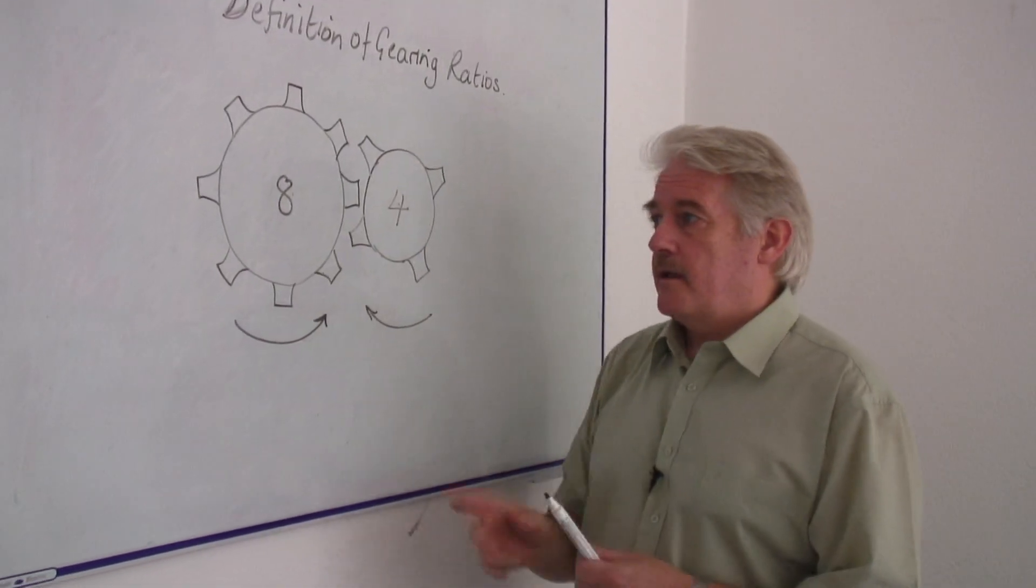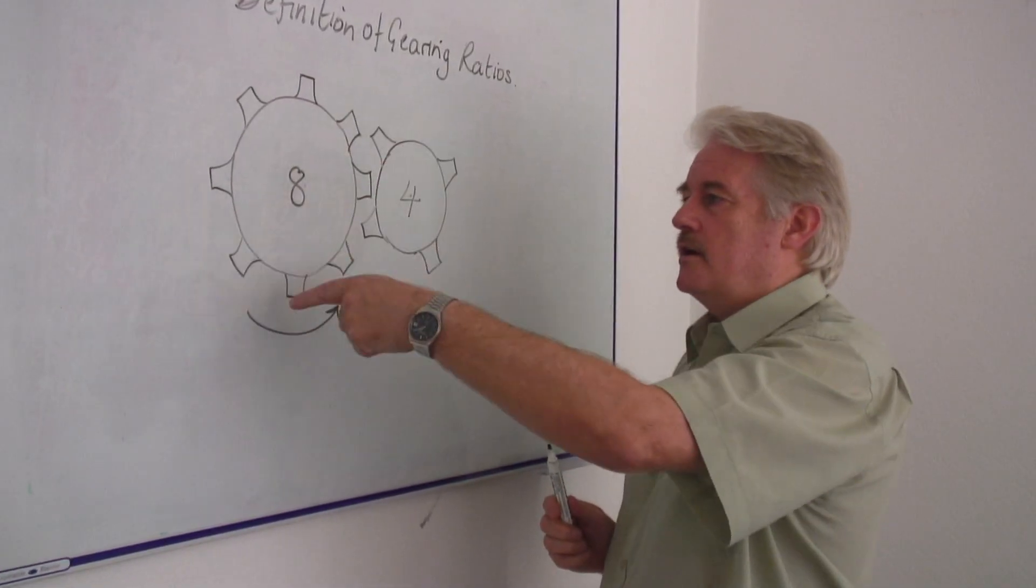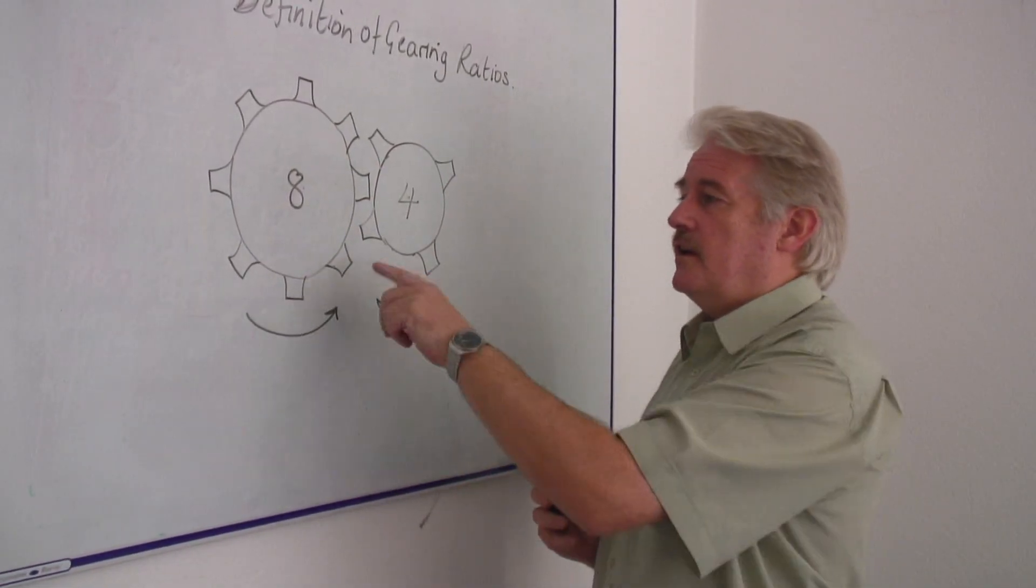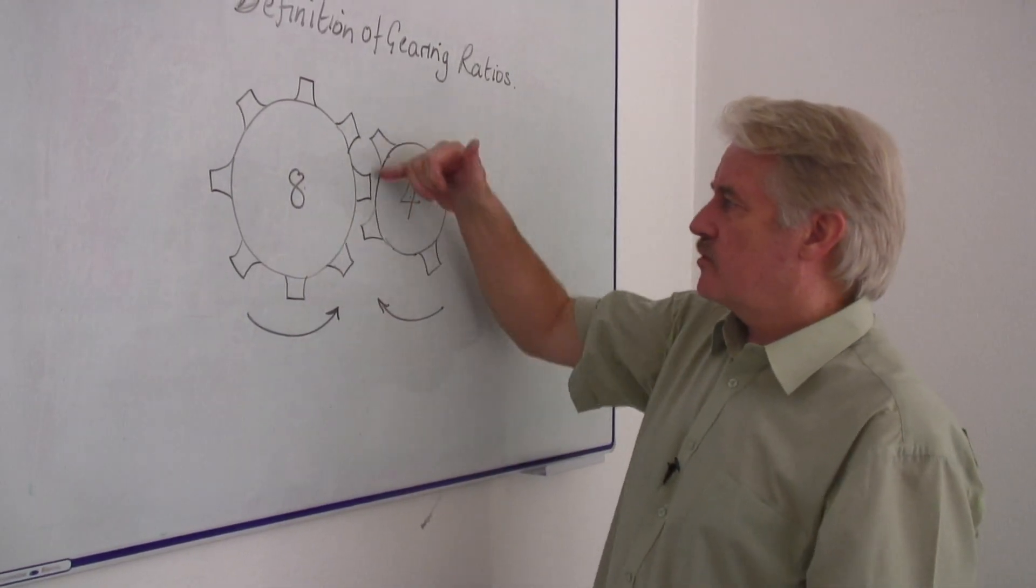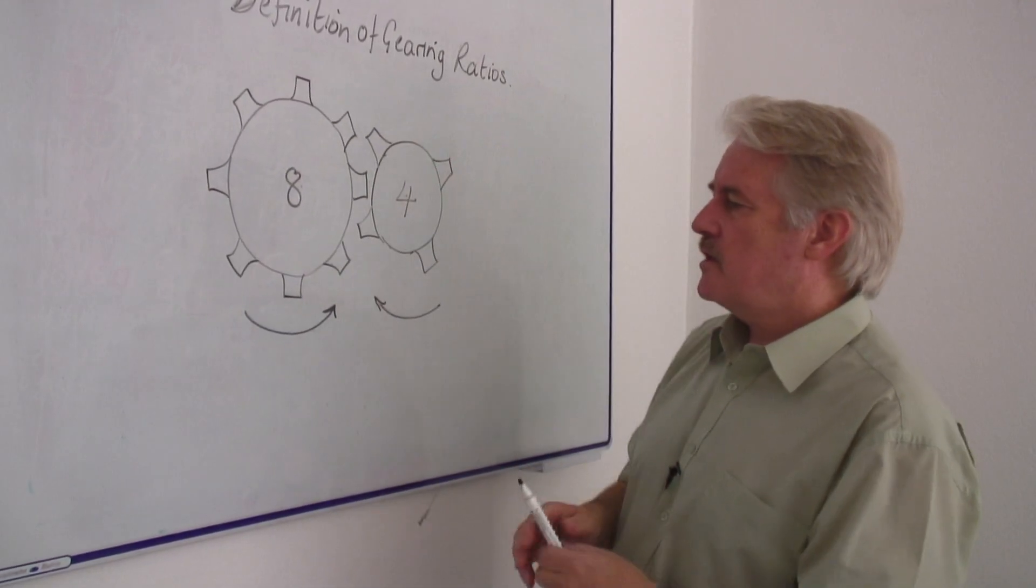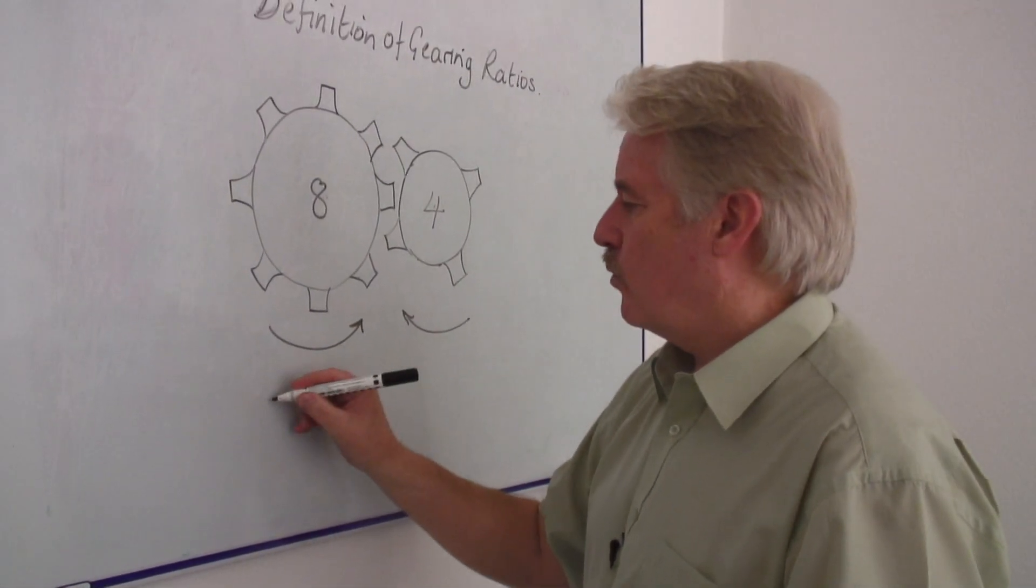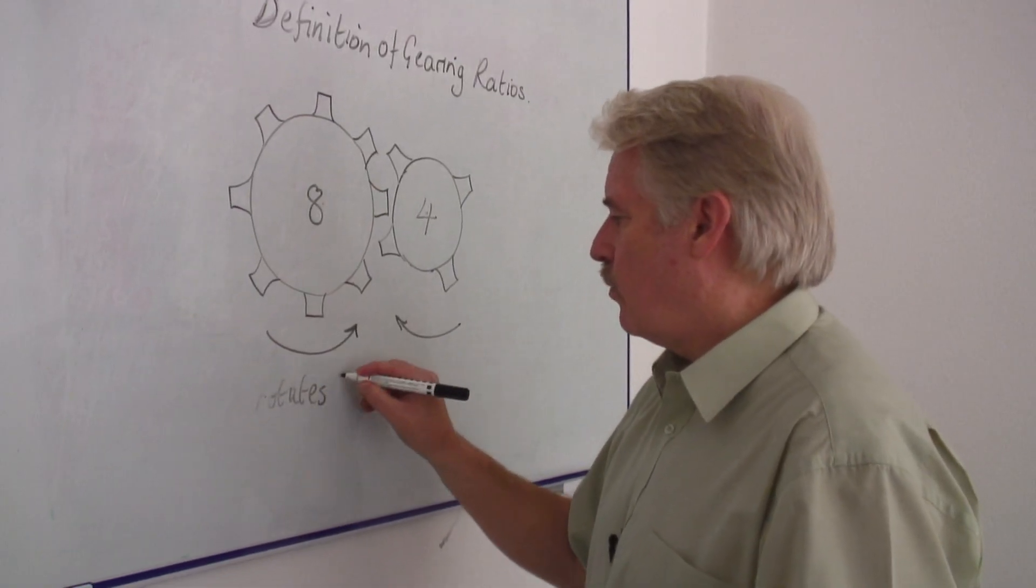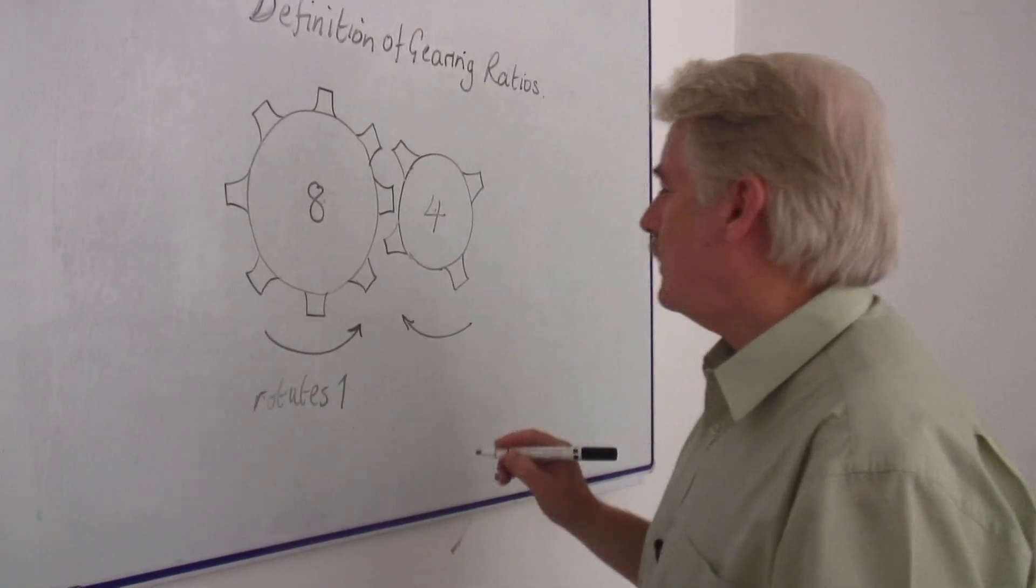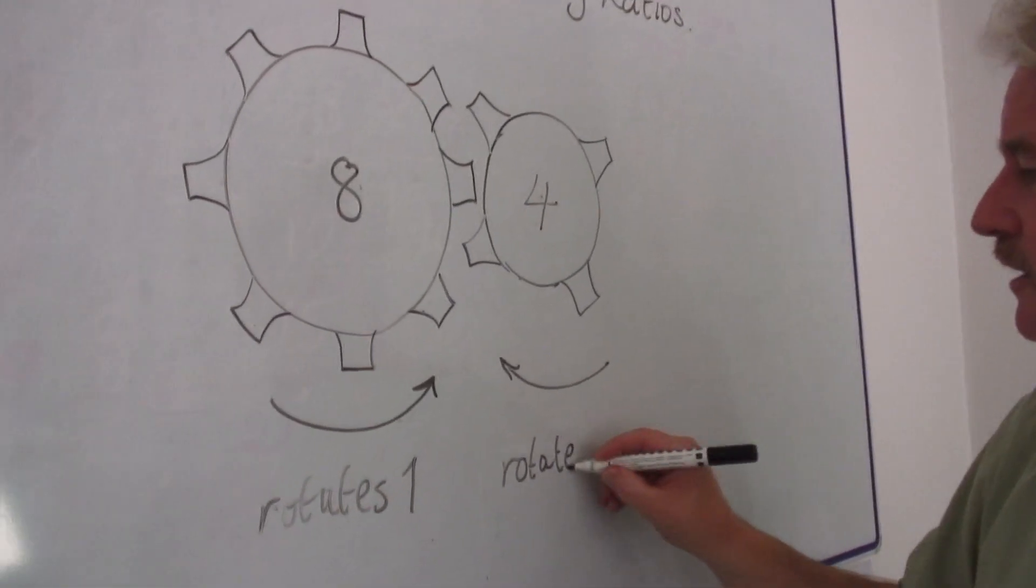Now if I rotate the one on the left anti-clockwise once, it's got eight teeth. Each tooth engages with the tooth on this wheel and this means that although this rotates only once, this one will rotate actually twice.